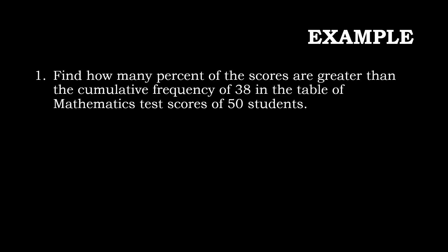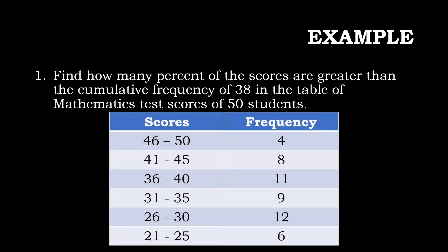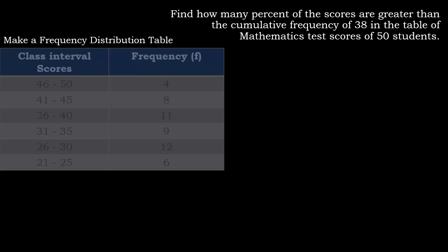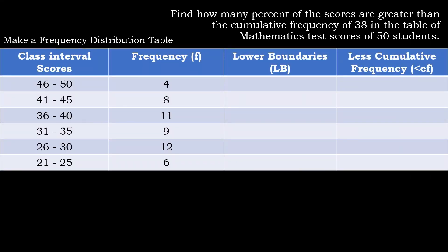Let us have an example. Find how many percent of the scores are greater than the cumulative frequency of 38 in the table of mathematics scores of 50 students. Given the same table from the previous example, we have the lower boundaries: 45.5, 40.5, 35.5, 30.5, 25.5, and 20.5. For the less cumulative frequency, starting at the bottom: copy 6, plus 12 is 18, plus 9 is 27, plus 11 is 38, plus 8 is 46, and plus 4 is 50.